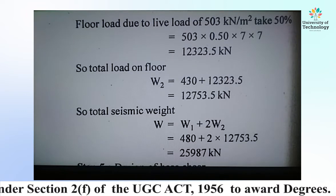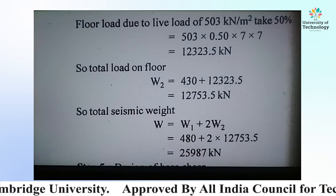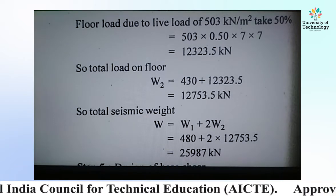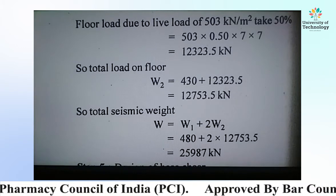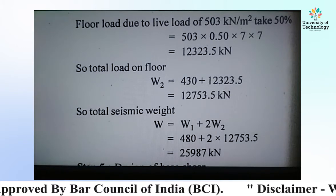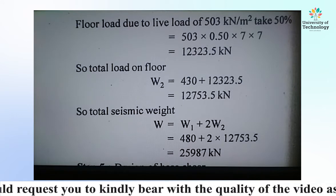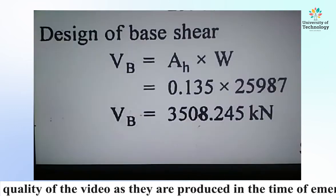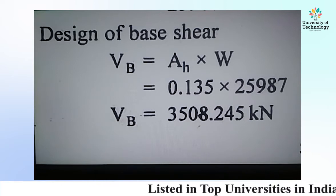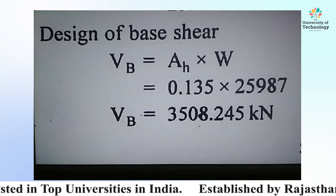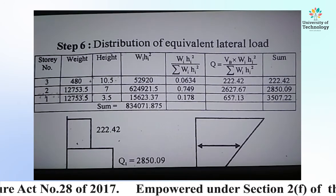Total load on floor W2 = 430 + 1237.5 = 1667.5 kN. Total seismic weight W = W1 + 2×W2 = 480 + 2 × 1237.5. Wait — total seismic weight W = 480 + 2 × 753.5 = 1987 kN approximately. Design base shear VB = Ah × W = 0.135 × 25987 ≈ 3508.245 kN.